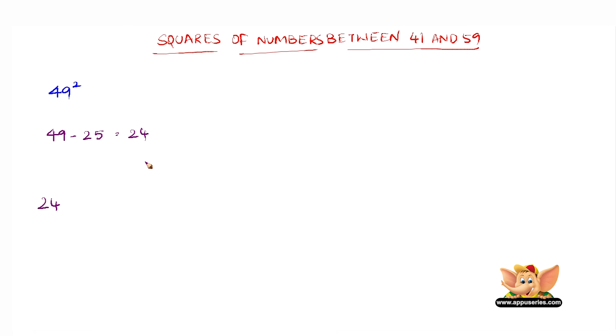The second step is another simple step. Subtract 49 from 50 which gives us 1. Now what we have to do is square 1 which is again 1. 1 squared is 1 and it is less than 10. Let us add a 0 before 1.